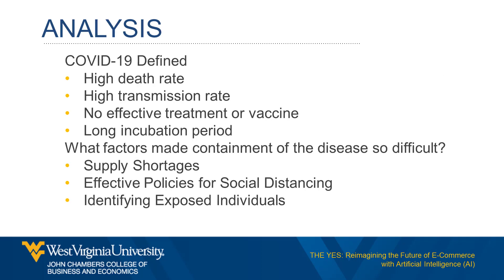COVID-19 is a coronavirus disease that attacks the respiratory system, causing most patients to develop dry cough, fever, and in extreme cases, pneumonia and death. The first case of COVID-19 was discovered in December 2019, but how the disease transmitted to humans was still unconfirmed as of April 2020.